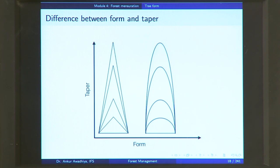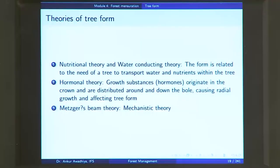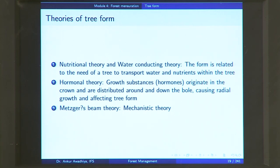The next question is: why does a tree have a taper? Why does a tree have this particular form — with the bottom portion as a frustum of a neiloid, the central portion as a frustum of a paraboloid, and the top portion as a cone? There are three different theories of tree form. The first is the nutritional theory, or water conducting theory, which says that the form is related to the need of a tree to transport water and nutrients, and that the tree's form evolved to optimize water and nutrient conduction throughout its body.